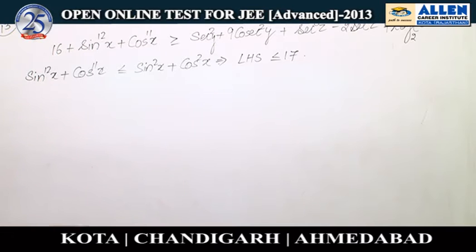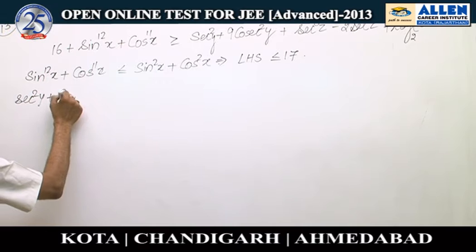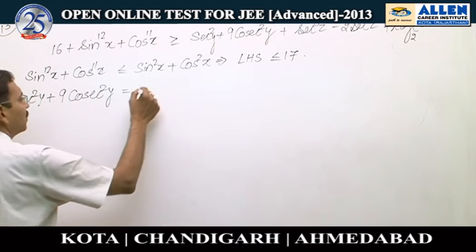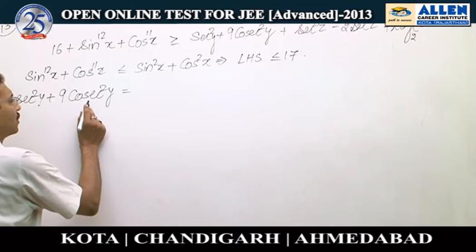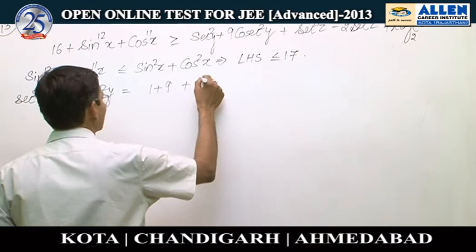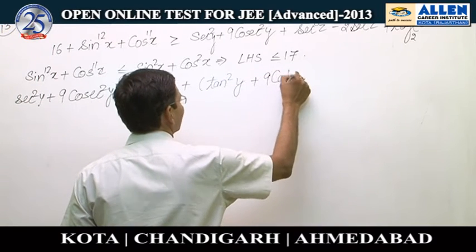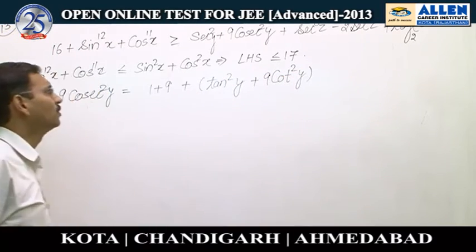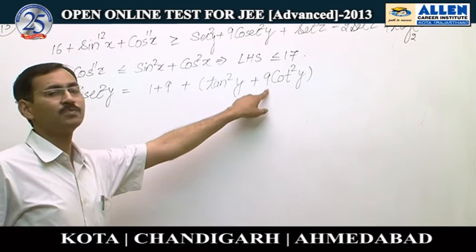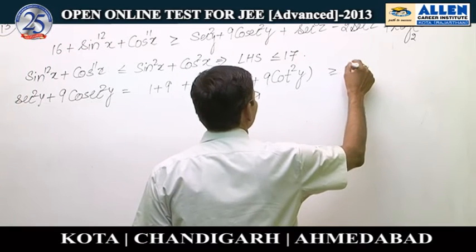Now let us talk about the right hand side. We have sec squared y plus 9 cos squared y. Converting to tan and cot: it is 1 plus tan squared y plus 9 times (1 plus cot squared y), giving us 10 plus tan squared y plus 9 cot squared y. The minimum value of tan squared y plus 9 cot squared y is 2√(tan²y · 9cot²y) = 6, by AM-GM. Therefore, this expression is always greater than or equal to 16.